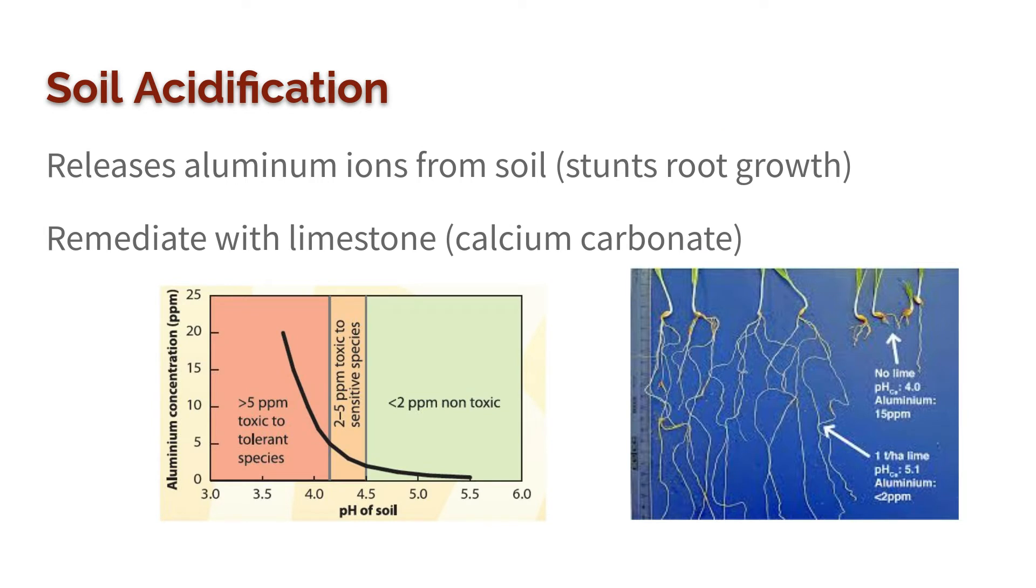I just want to focus real quick on soil acidification. What happens when the soil becomes acidic? It makes it so that aluminum ions are more soluble in soil, and aluminum, what it does to the plant, is it'll stunt root growth. Because the roots don't grow very well, it's not getting the water and nutrients required to keep that plant alive, so it dies.